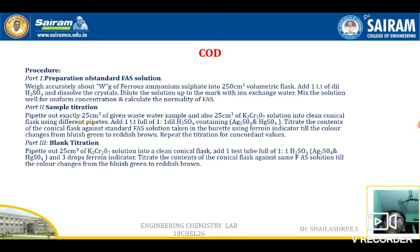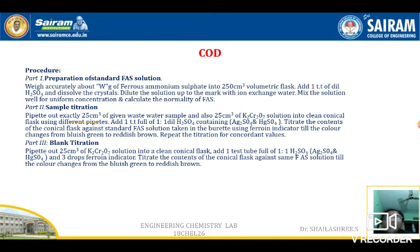Then add a few drops of indicator. The indicator used here is ferroin, whose chemical composition is ferrous 1,10-phenanthroline sulfate. After adding the indicator, you have to titrate. Remember, you must add the indicator equally to all the titrations — add 6 drops to each trial, not less or more. Add the ferroin indicator; you will get a bluish-green color. Titrate with standard FAS taken in the burette until the color changes from blue-green to reddish-brown. That is your endpoint. Do 3 trials and record the values.